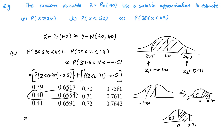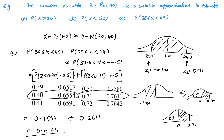For z equal to 0.40: the table gives 0.6554, minus 0.5 gives 0.1554. For z equal to 0.71: the table gives 0.7611, minus 0.5 gives 0.2611. Adding these together: 0.1554 plus 0.2611 equals 0.4165. Working this out exactly using Poisson gives 0.411, so there's a slight variation — expected because we're both approximating from Poisson to normal and rounding to use the tables.